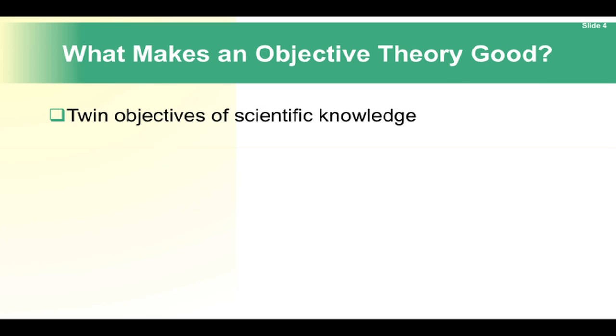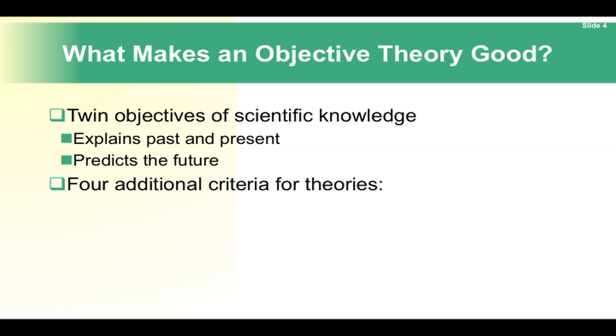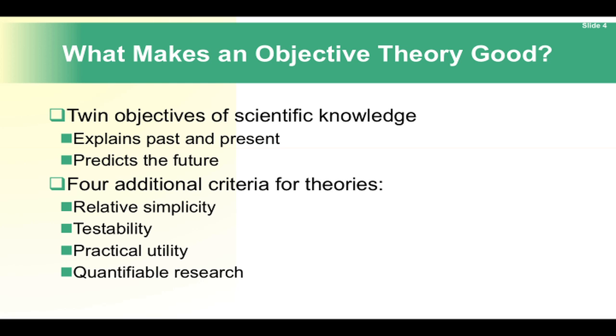Twin objectives of scientific knowledge: it explains past and present, and predicts the future. There are four additional criteria for theories: relative simplicity, testability, practical utility, and quantifiable research.